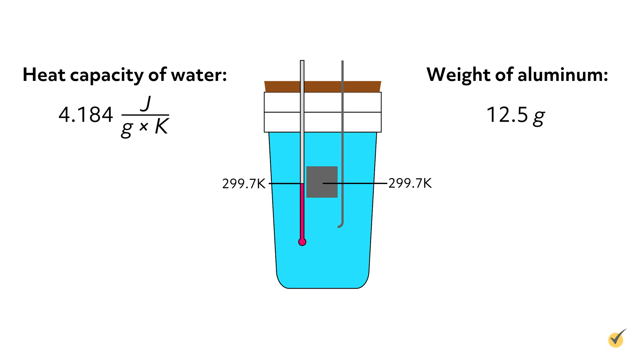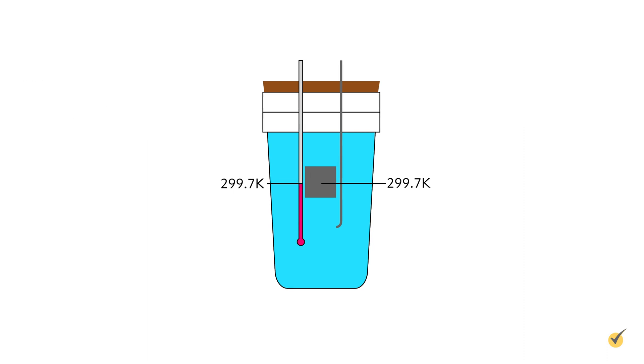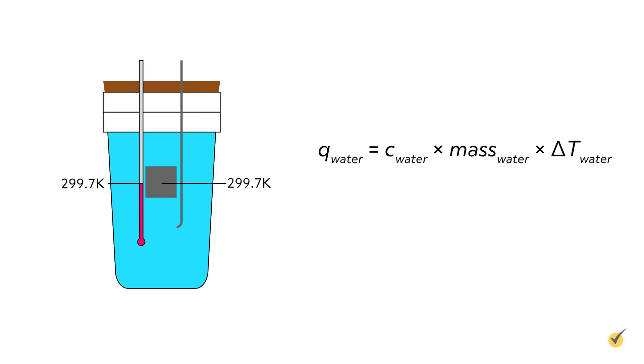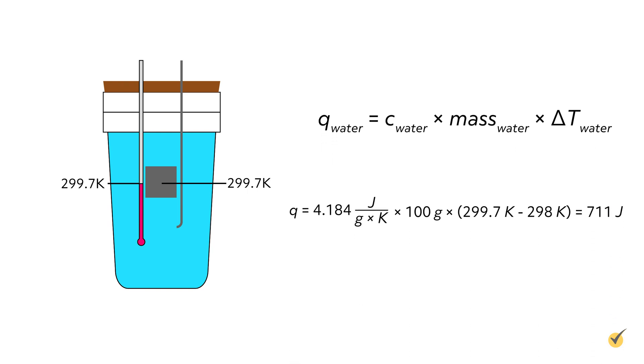And with this information, we can now calculate the specific heat capacity of aluminum. Let's start by calculating how much thermal energy was absorbed by the water using the following equation. The heat absorbed is equal to the specific heat capacity of water times the mass of water times the change in temperature. Plugging those values in, we find that the water absorbed 711 joules of thermal energy.